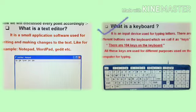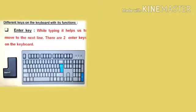We have also discussed what is a keyboard. It is an input device used for typing letters, and there are total 104 keys on a keyboard. The first key discussed is the enter key. While typing, it helps us to move to the next line. There are two enter keys on the keyboard.